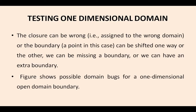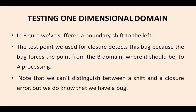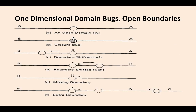The figure assumed that the boundary was open to A. In the figure, we have suffered a boundary shift to the left, and the test point used for closure detects this bug because the bug forces the point from domain B where it should be to A processing. Note that we can't distinguish between a shift and a closure error, but we can know that we have a bug. Here it is a closure bug, and it is a boundary shifted to left.